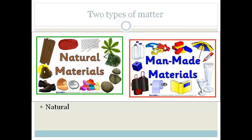Whereas your man made materials tend to be your plastics, your pens, your inks for your pens, your glass, your paper. All that type of thing is man made materials. So there are two types of matter, natural and man made.